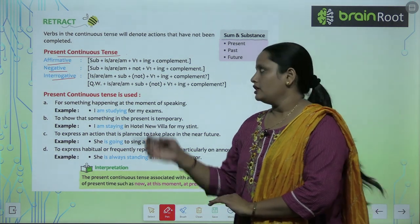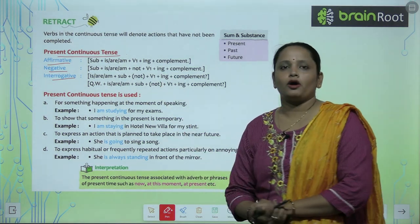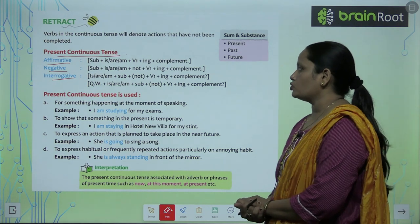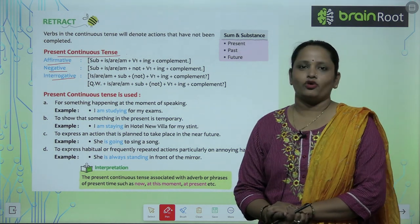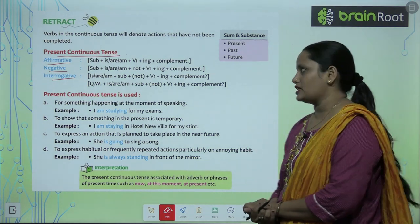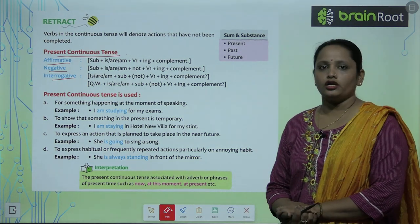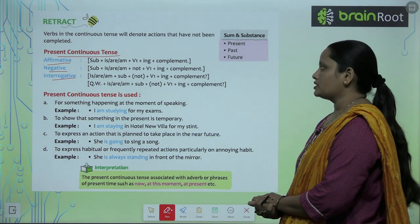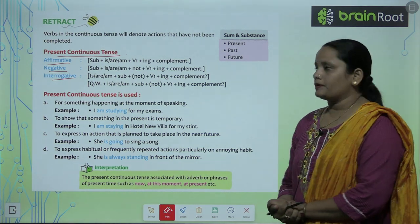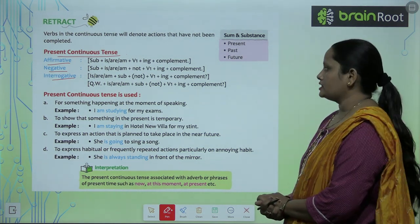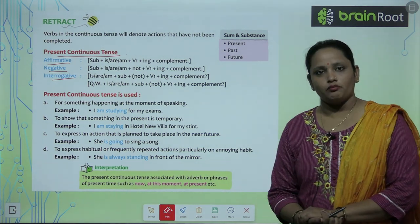For negative sentences in Present Continuous Tense, the rule is: Subject + is/am/are + not + verb's first form + ing + complement.